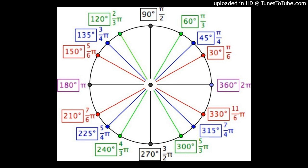The next system is the circular system, also called radian measure. One radian is the measure of an angle subtended at the center of a circle by an arc whose length equals the radius of the circle. For example, if a circle has radius 5 cm and you take an arc AB of length 5 cm, then the angle AOB formed by joining A and B to the origin is one radian. The system in which measures of angles are expressed in radians is called the circular system.